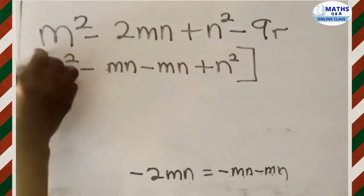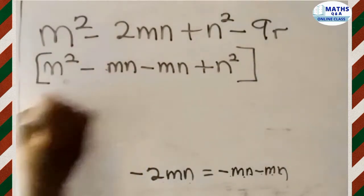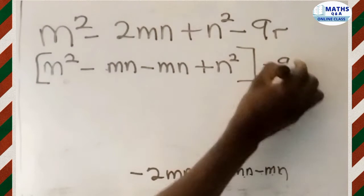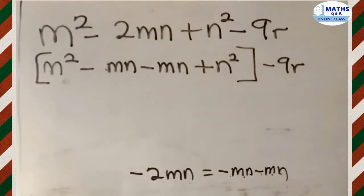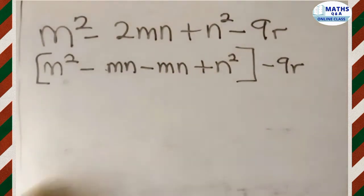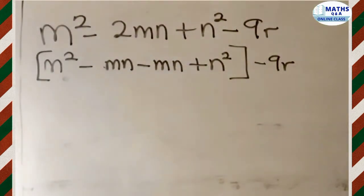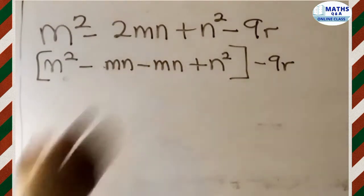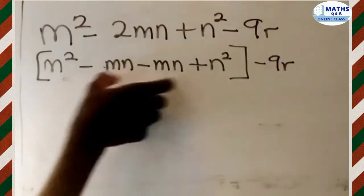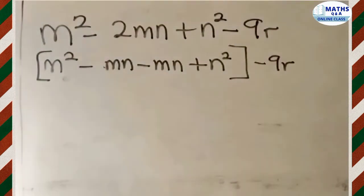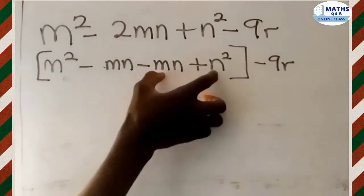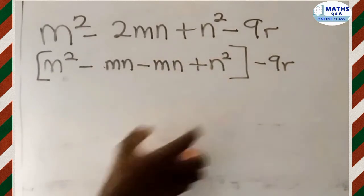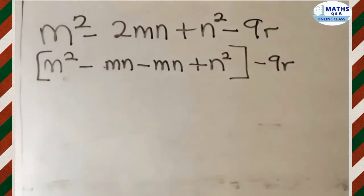We group this so it is clear. We have our minus 9R still remaining. The expression in the bracket is what we expanded to get 4 terms. Now that we have expanded, we will factorize the terms in the bracket — because we have 4 terms, we take the first 2 and factorize, then take the last 2 and factorize.